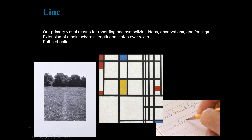Lines also sometimes appear to be paths of action or records of energy left by moving points. Richard Long's A Line Made by Walking is quite literally a record of the energy left from the path he walked on. Mondrian's Composition with Red, Blue, and Yellow is a very clear example of various lines across a picture plane.